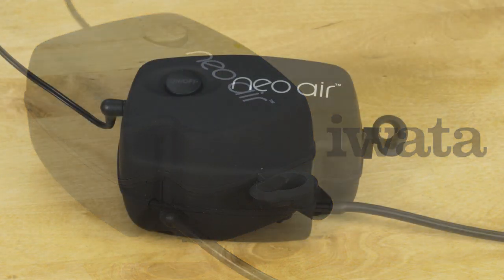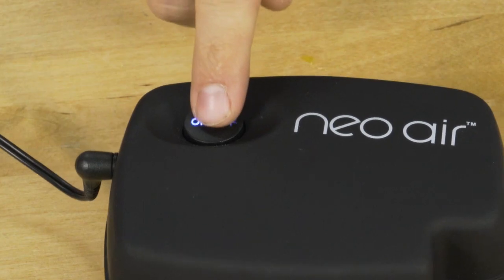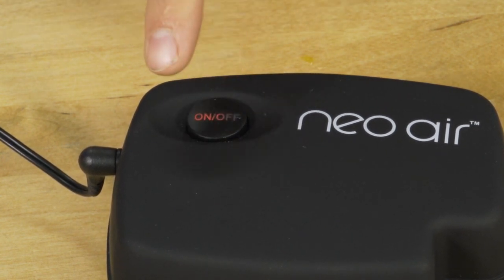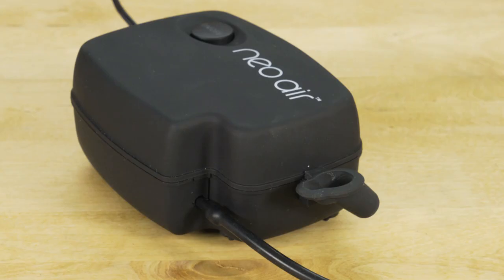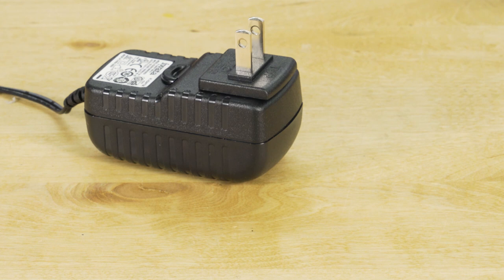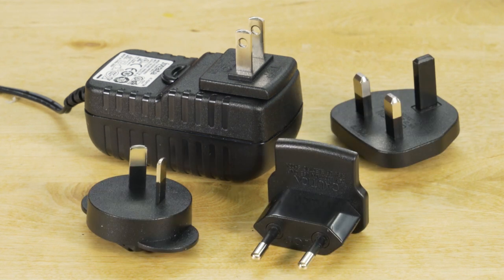The NEO Compact Compressor offers an on and off switch with 3-speed adjustment, an air hose, a built-in airbrush holder, and an AC power adapter complete with international plugs.